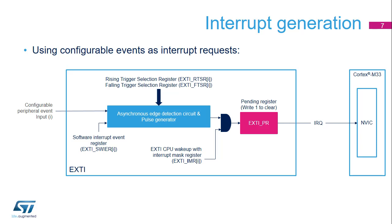An AND gate is used to mask or enable the generation of the interrupt to the NVIC. Finally, a flag is set in the EXTI_PR register when the interrupt is generated to the NVIC. This flag enables the software to determine the cause of the interrupt. This flag is expected to be cleared by the interrupt service routine.